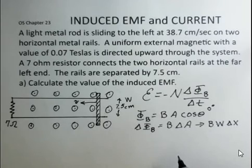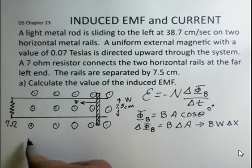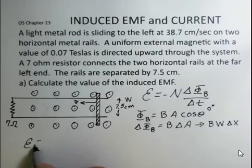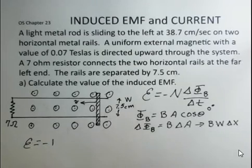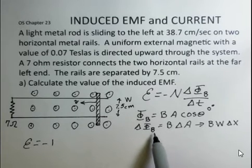So let's go ahead and put in values here. Minus, and temporarily I'll keep this minus sign and the one. And now the delta magnetic flux.